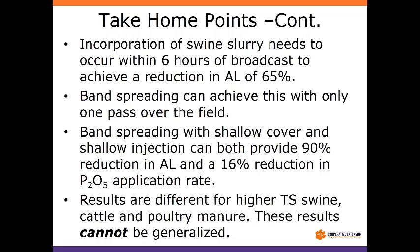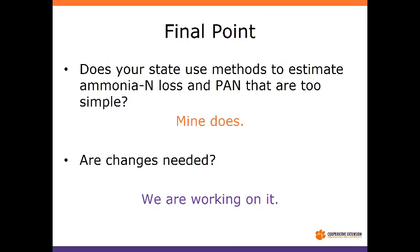Take-home points: it's not only impacting plant available nitrogen — it's how much I put out, and it's going to affect my phosphorus application rates. Band spreading methods get some of the biggest impacts with the least horsepower and time. These numbers change if you alter the total solids content for swine, and dairy and poultry are totally different — we can't generalize across species the way we did in the past. Does your state use estimates that are too simple? Mine does, and change is needed. We're already talking with growers about updating this. We need to be more precise, and we need more good wind-tunnel data to do an even better job.